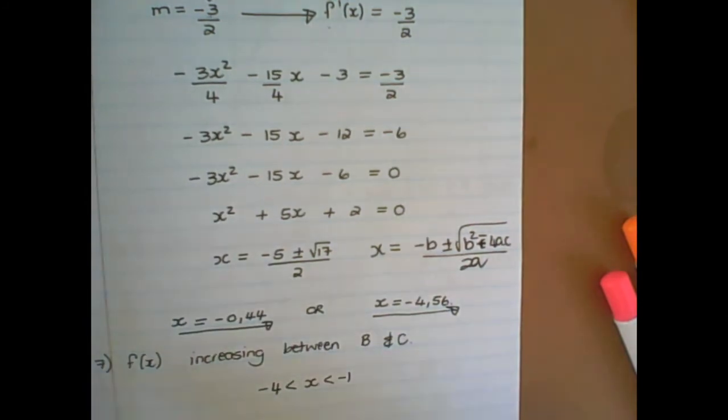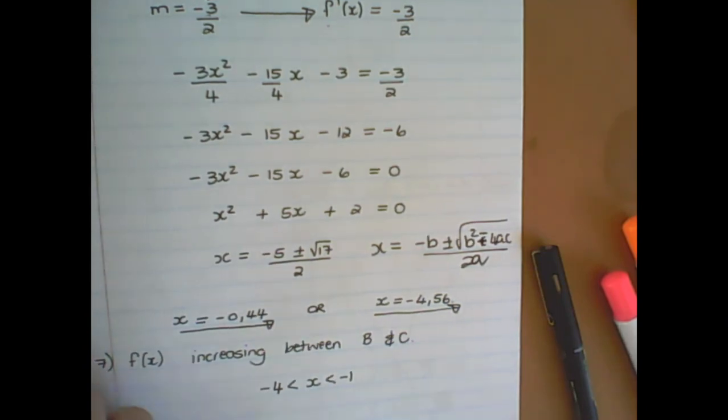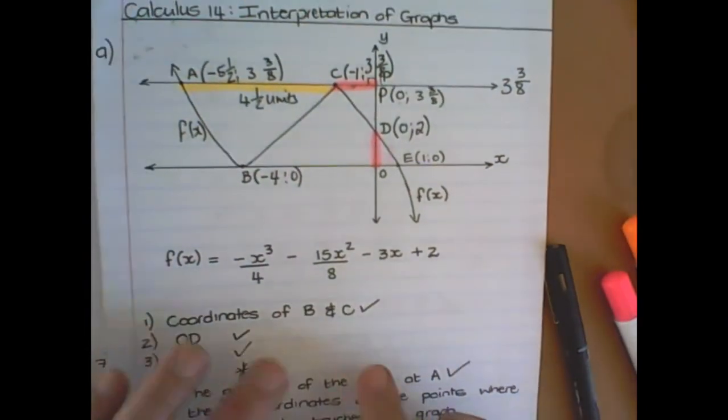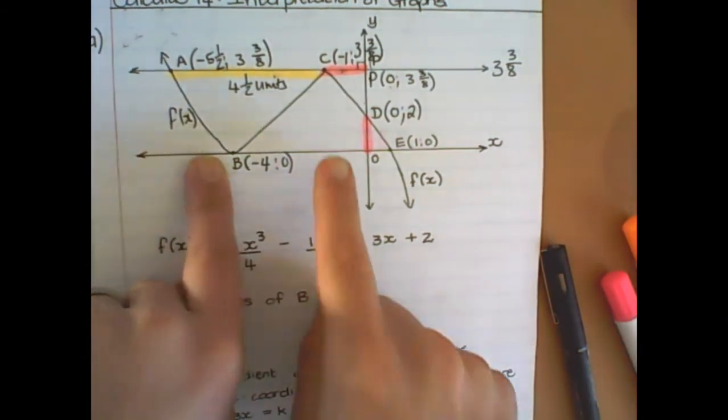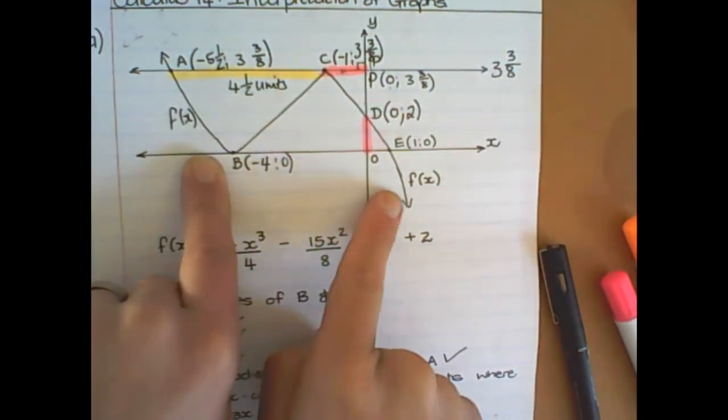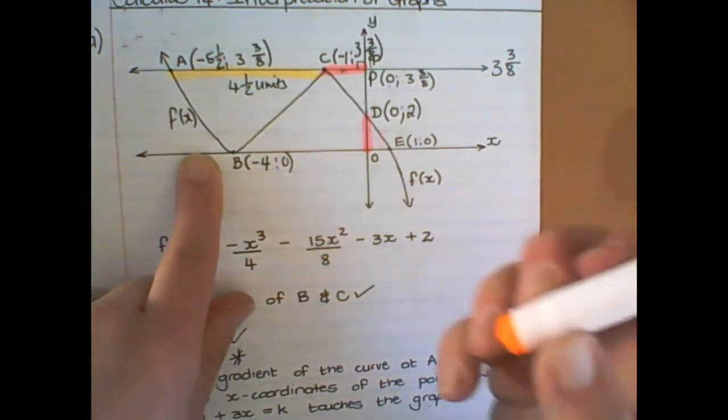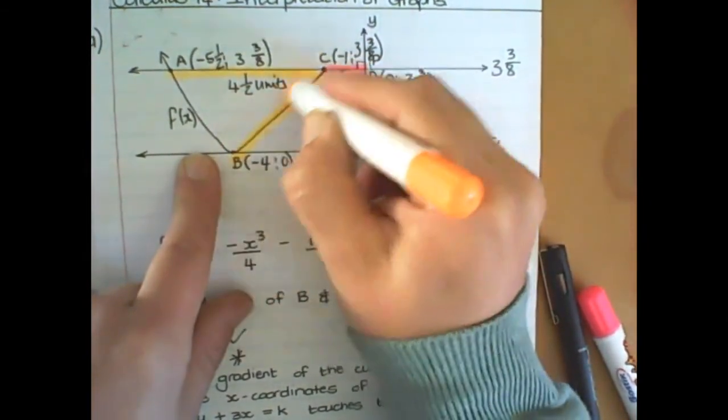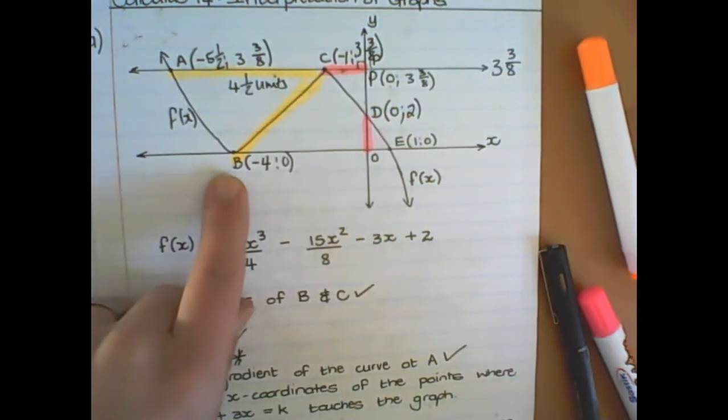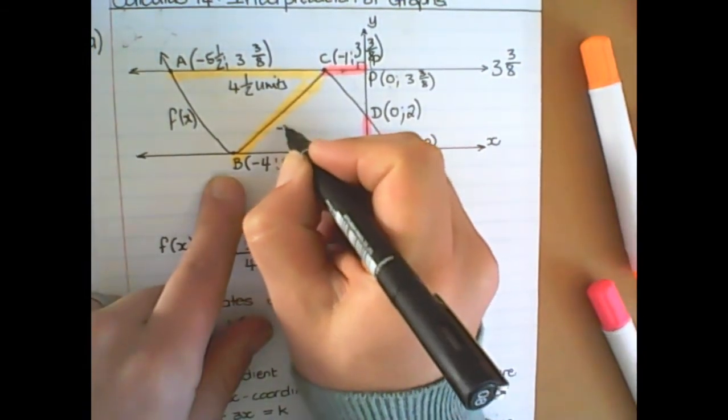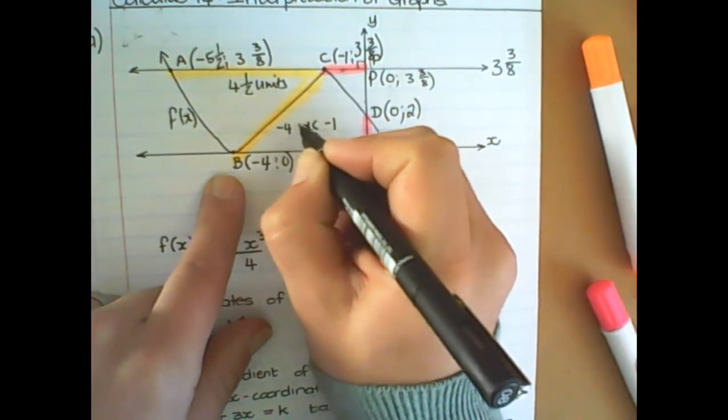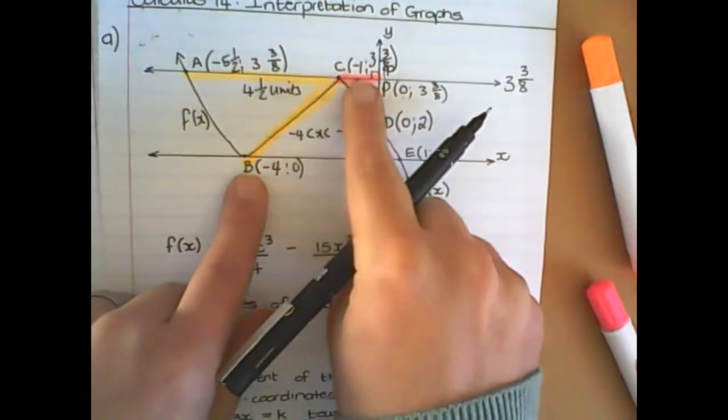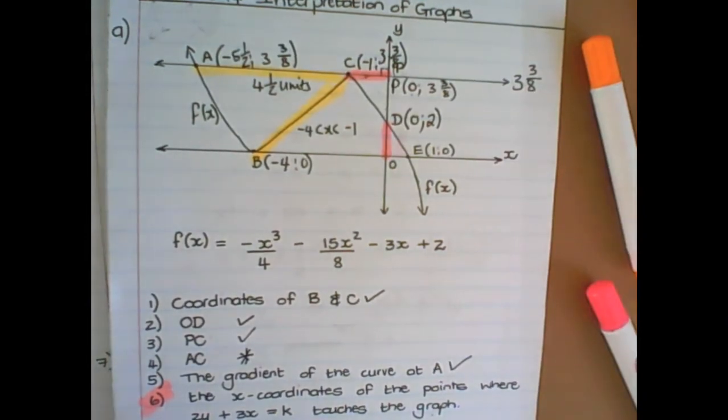And the last question is very easy. For which values of x is fx increasing? So, you can see here the gradient is decreasing. And after the point c, the gradient is decreasing. So it is increasing between the points c and b. And the value between these points is negative 4 and negative 1. So x must be between negative 4 and negative 1 for it to be increasing.